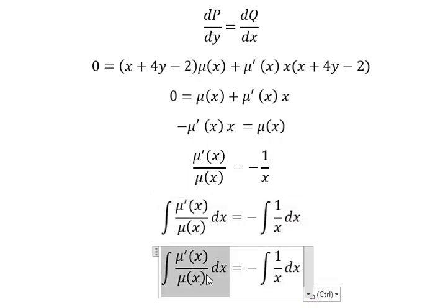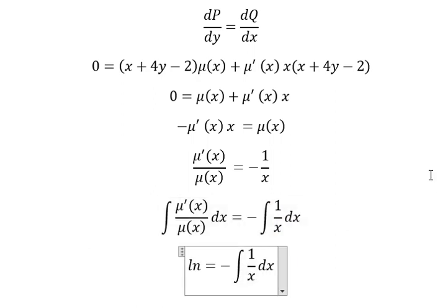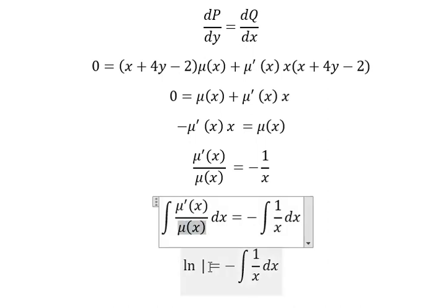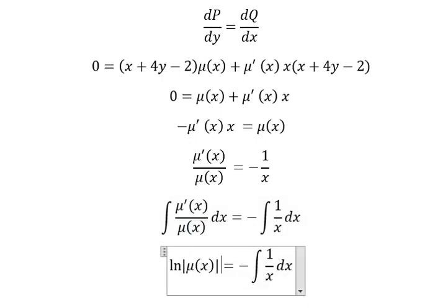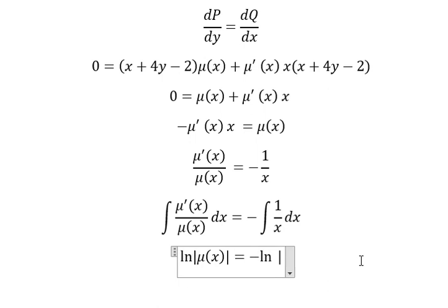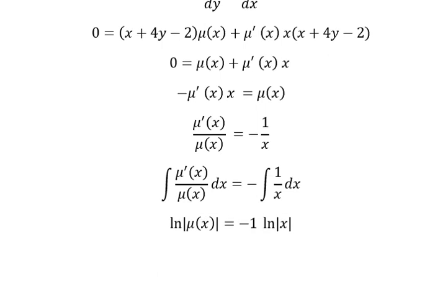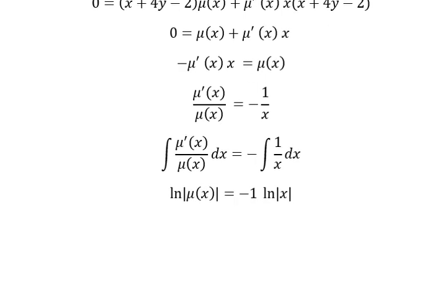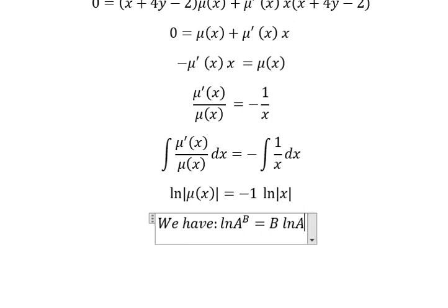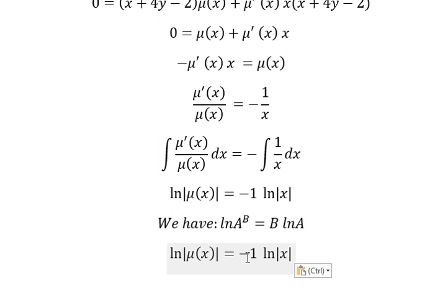So the integration of this one, we have like this. This one is about ln of the absolute value of S. This one we have negative number 1. Now we have the formula in here. So we put negative number 1 inside the natural log in here, that is this one.